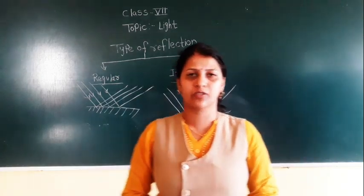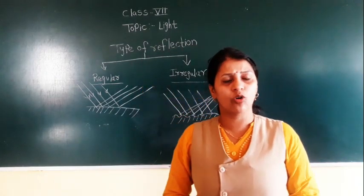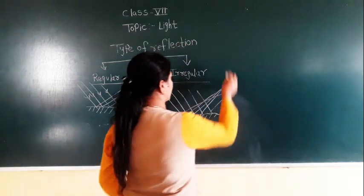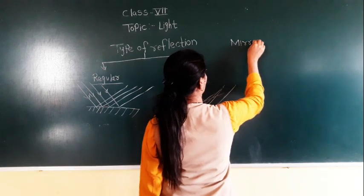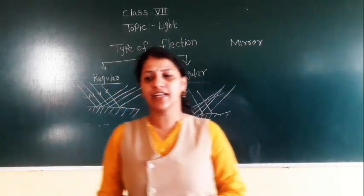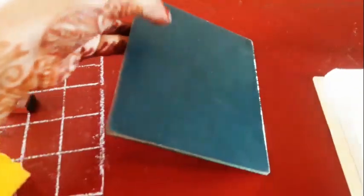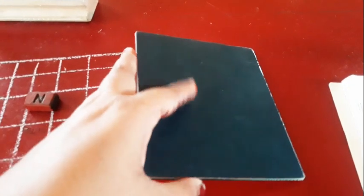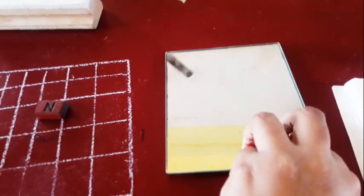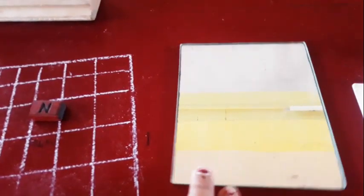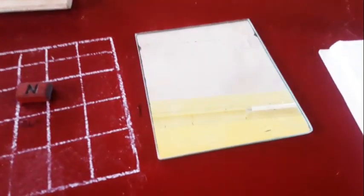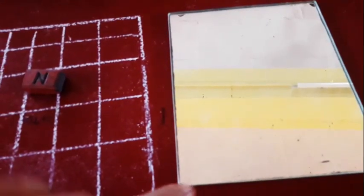We are also going to learn about the mirror. What is a mirror? A mirror is an opaque object. This is a plane mirror. On one side it is an opaque object, and if you see the other side, it is a smooth surface. So you can get a clear image — you can see your clear image in this plane mirror.